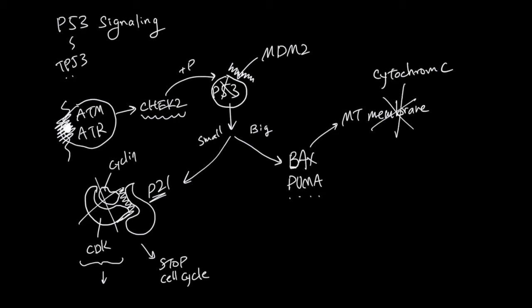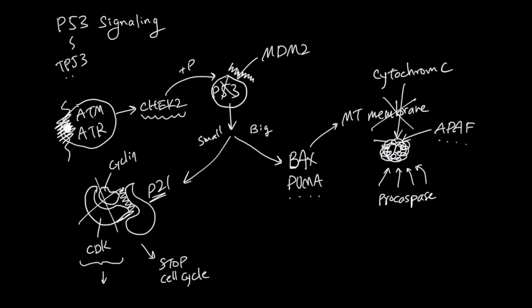Cytochrome C's normal job within the mitochondria is to work in the metabolic process. But when it comes out of the mitochondria and into the cytosol, it is going to recruit another protein called APAF — Apoptosis Protease Activating Factor. This bound cytochrome C and APAF complex is going to change configuration, recruit many pro-caspases, and then cut those pro-caspases to make them into caspases.